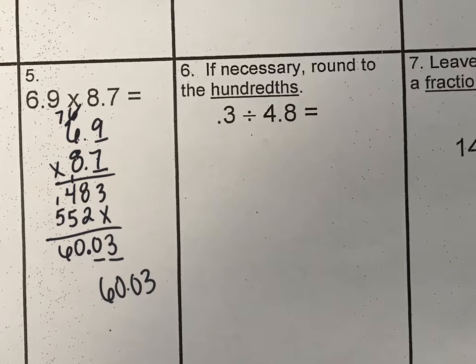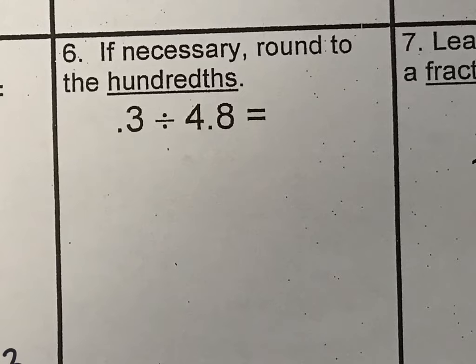Our next one is number 6. So this one we've been struggling with. So remember, our first number is going to go inside our division. So 0.3. I'm going to write it as 0.3. And then on the outside, we put our 4.8. You cannot have a decimal on the outside of your division. We want to scoot that over.